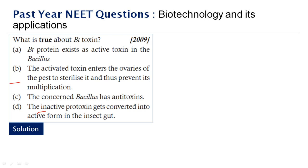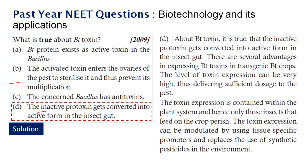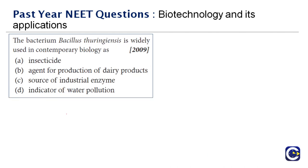The toxin expression is contained within the plant system, and hence only those insects that feed upon the crop perish. It is targeted — only the pests that selectively consume the crop will die. Therefore the right answer to this question is option D.